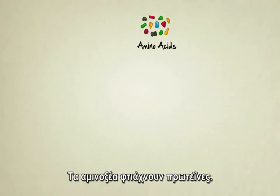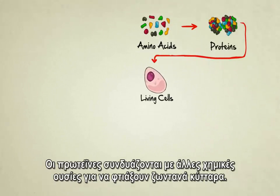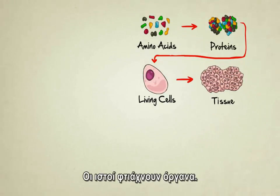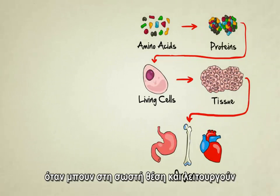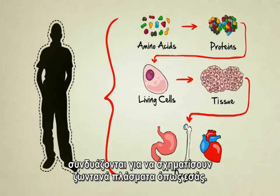Amino acids make up proteins. Proteins, along with other chemicals, combine to form living cells. Cells make up tissues. Tissues make up organs. And organs, when they're all put together and functioning, of course, combine to form living creatures like you and me.